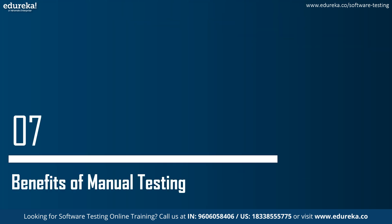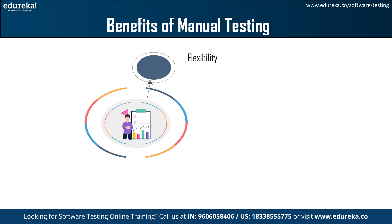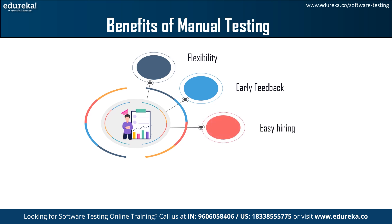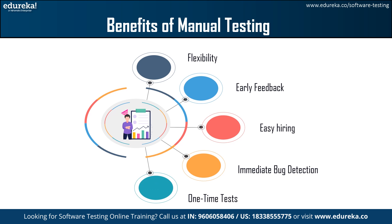We will now discuss the benefits of manual testing. First is flexibility — manual testing allows testers to explore the application dynamically, adapting their approach based on real-time observation and changes. Next is earlier feedback — manual testing is effective in the earlier stages of development when the application is not yet stable and detailed test cases are still to be defined. Next is easy onboarding, as anyone can test. Then, immediate bug detection — testers can identify and report issues during test execution, allowing for earlier bug detection. And the last benefit is one-time tests — for tests that are performed infrequently or are too complex to automate efficiently, manual testing is frequently an acceptable choice.